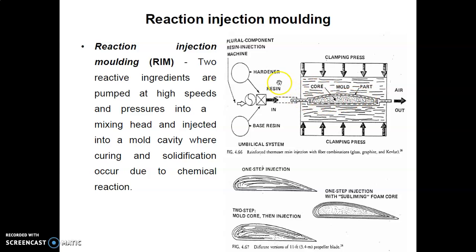The hardener and base resin are combined and then pumped at high speed under pressure into the mold head. The part is held in the clamping press. Inside the mold, the mold cavity is filled and excess air comes out. After that, the curing process and solidification phase take place through chemical reactions.